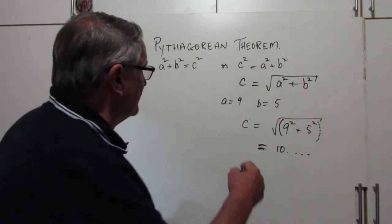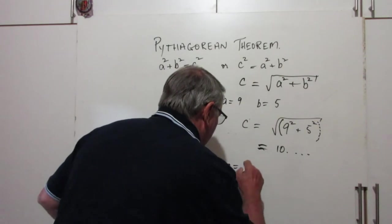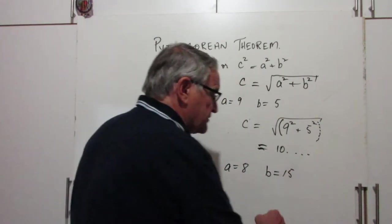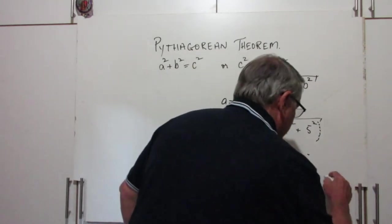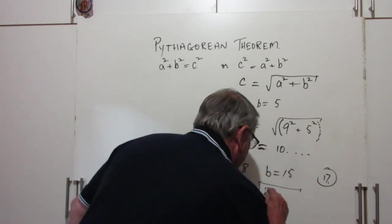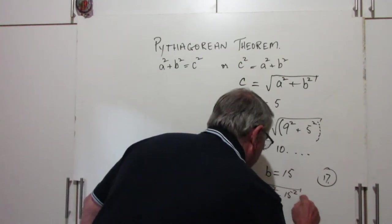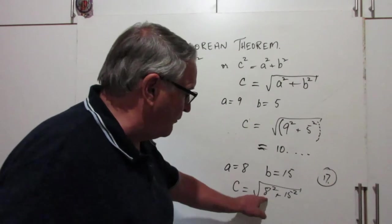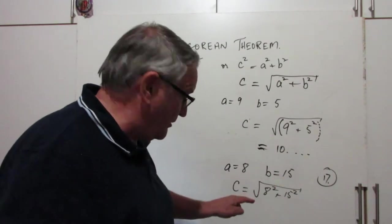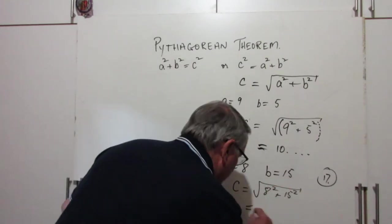Let's do one of the Pythagorean triples. If a is equal to 8 and b is equal to 15, we know that this is going to be an 8, 15, 17 triangle. So c is equal to the square root of 8² plus 15². 8² is 64, 15² is 225, add them together you get 289. The square root of 289 is 17.